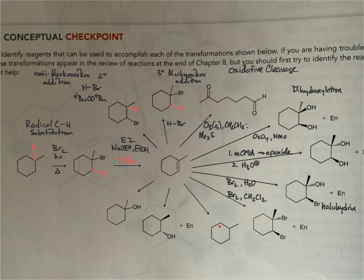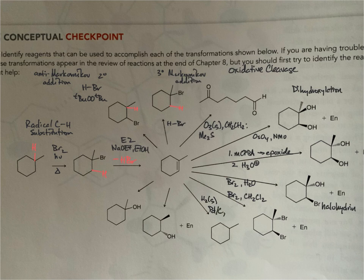The next reaction: the starting alkene has one ring and one pi bond (two degrees of unsaturation), while the product has only the ring — so we're doing a reduction, specifically a hydrogenation. We're adding H₂ across the pi bond using a transition metal catalyst, palladium on carbon, in a polar protic solvent.